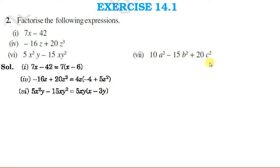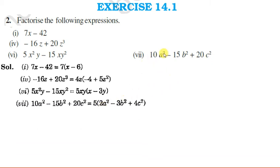Next: 10a² − 15b² + 20c². Here 5 is a factor of all three terms, and no variable is common across all three terms. So after taking 5 common: 10 divided by 5 is 2, giving 2a²; 15 divided by 5 is 3, giving minus 3b²; and 20 divided by 5 is 4, giving plus 4c². So the answer is 5(2a² − 3b² + 4c²).